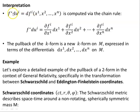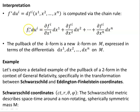For interpretation: F upper asterisk DUI is DFI of X1, X2, ..., XN, computed by the chain rule. So F asterisk DUI is the partial FI over partial X1 times DX1, plus partial FI over partial X2 times DX2, plus ... plus partial FI over partial XN times DXN. The pullback of the K-form is a new K-form on M, expressed in terms of the differentials DX1, DX2, ..., DXN on M. So the pullback of DU1 is partial F1 over partial X1 times DX1 plus partial F1 over partial X2 times DX2 plus ... plus partial F1 over partial XN times DXN, and similarly for DU2, DU3, and so on.